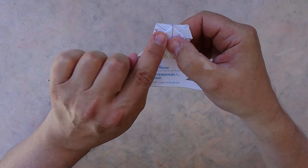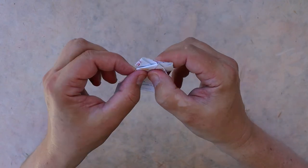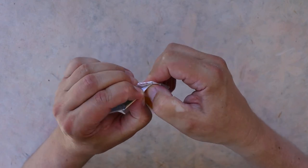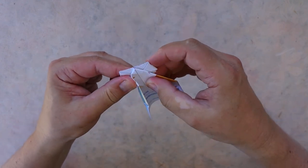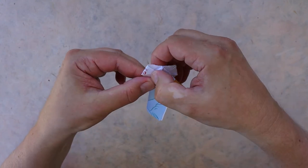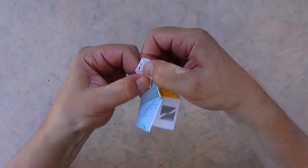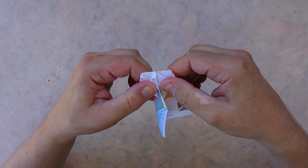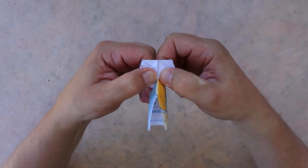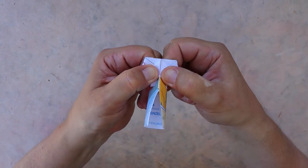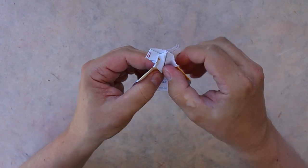And do the same thing on this side. The paper is very thick here so you need some power to fold this over, and open.